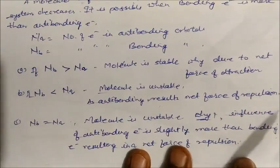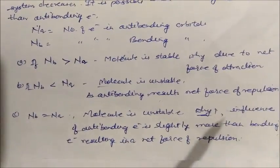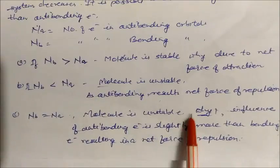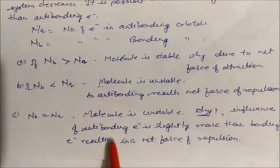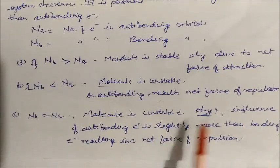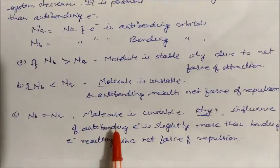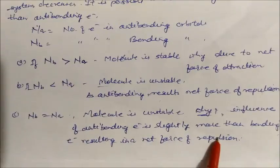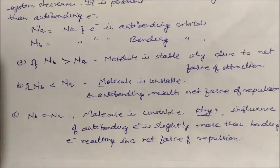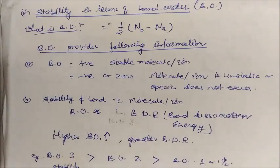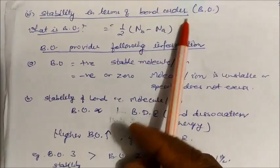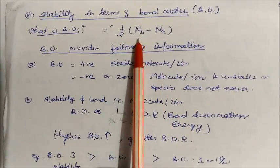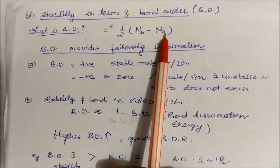When bonding and anti-bonding electrons are equal, the molecule is still unstable because anti-bonding electrons influence the system slightly more than bonding electrons, resulting again in a net force of repulsion. Bond order is defined as half the difference between the number of bonding electrons and the number of anti-bonding electrons: Bond Order = (NB − NA) / 2.